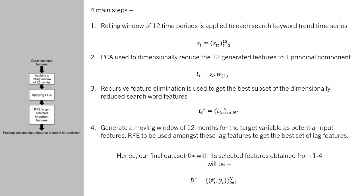Finally, when we get these dimensionally reduced and selected features, we generate a moving window of 12 months for the target variable as the potential input features. We then run RFE again among these lag features to get the best set of lag features, and finally we obtain our input training dataset.